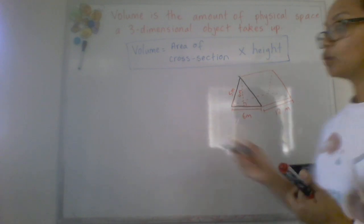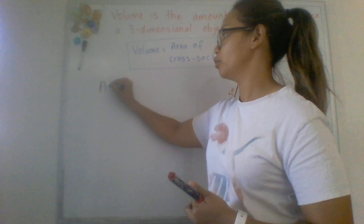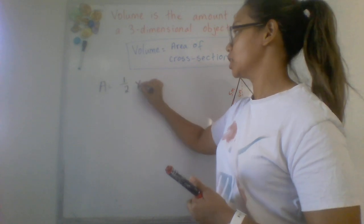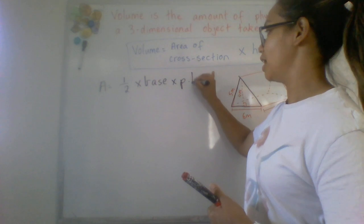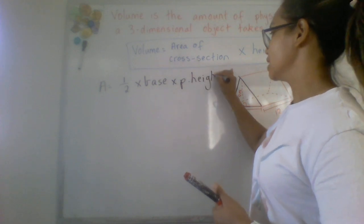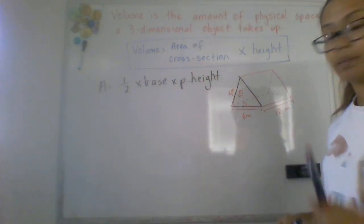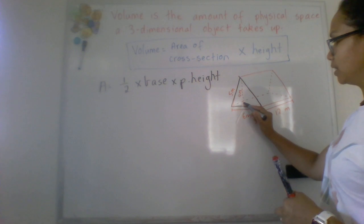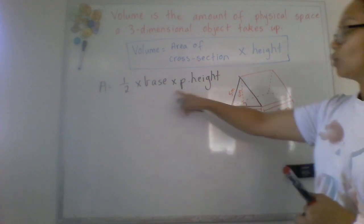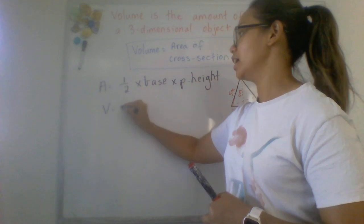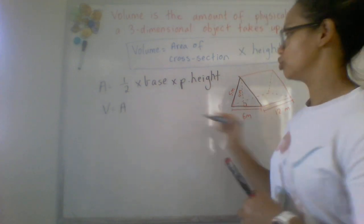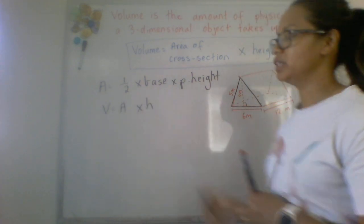If we look at this shape here the face of the shape or my cross sectional face would be a triangle right there. So we need to remember the area of the triangle formula which is half times your base times your perpendicular height, so your height that is 90 degrees to your base. So we know that volume is the area of the cross section which is a triangle times the height or the depth.